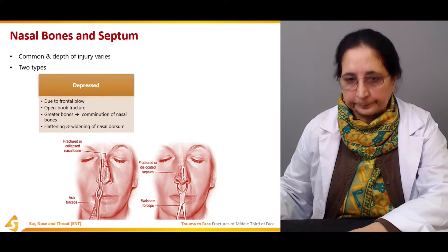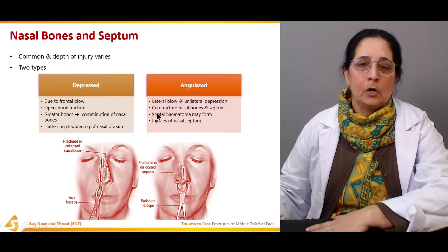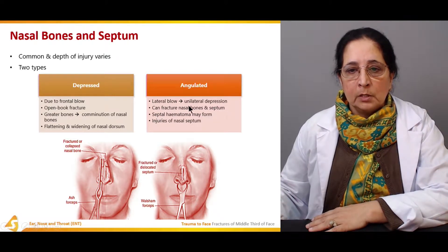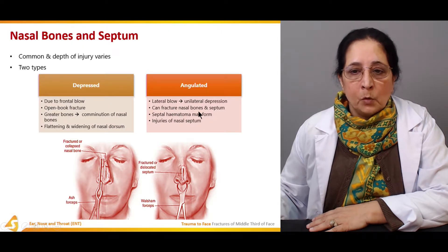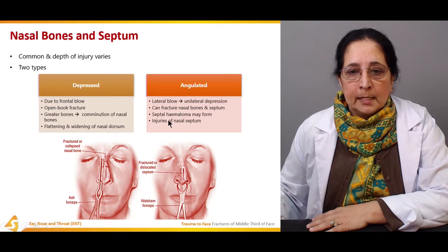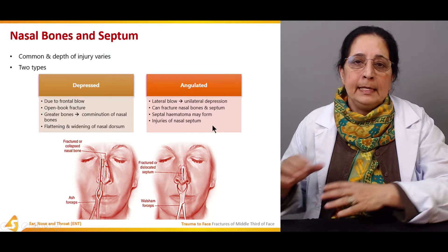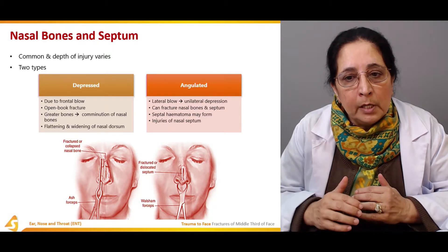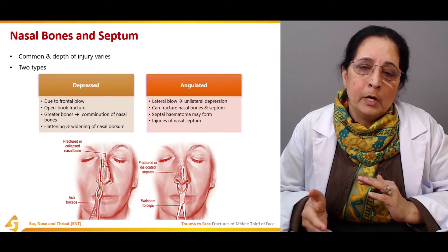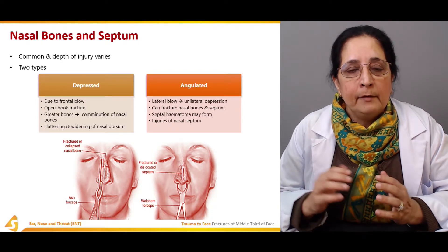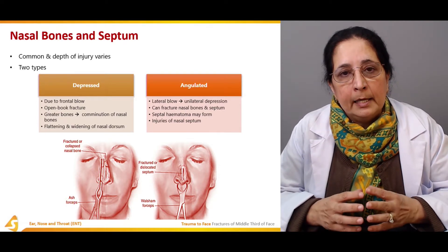The angulated fracture is caused by a lateral blow to the nose, causing unilateral depression. It can fracture the nasal bones and septum, and a septal hematoma may form — a collection of blood within the septum — representing injury to the nasal septum.